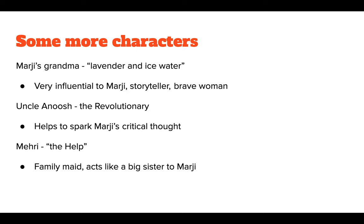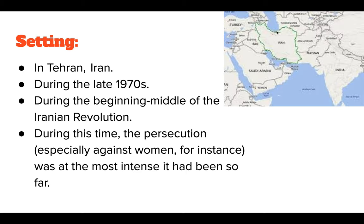The setting of this book is in Iran, in the capital city of Tehran, in the middle of the Middle East — with Iraq, Afghanistan, and Saudi Arabia nearby. The story takes place during the late 1970s, during the beginning to middle of the Iranian Revolution. Remember, the persecution — especially against women, as Marji will show us — was the most intense it had been so far. That's all we'll cover for now on Persepolis. Next week we'll talk about the ending of part one. Have fun reading the first section, and I'll see you later.